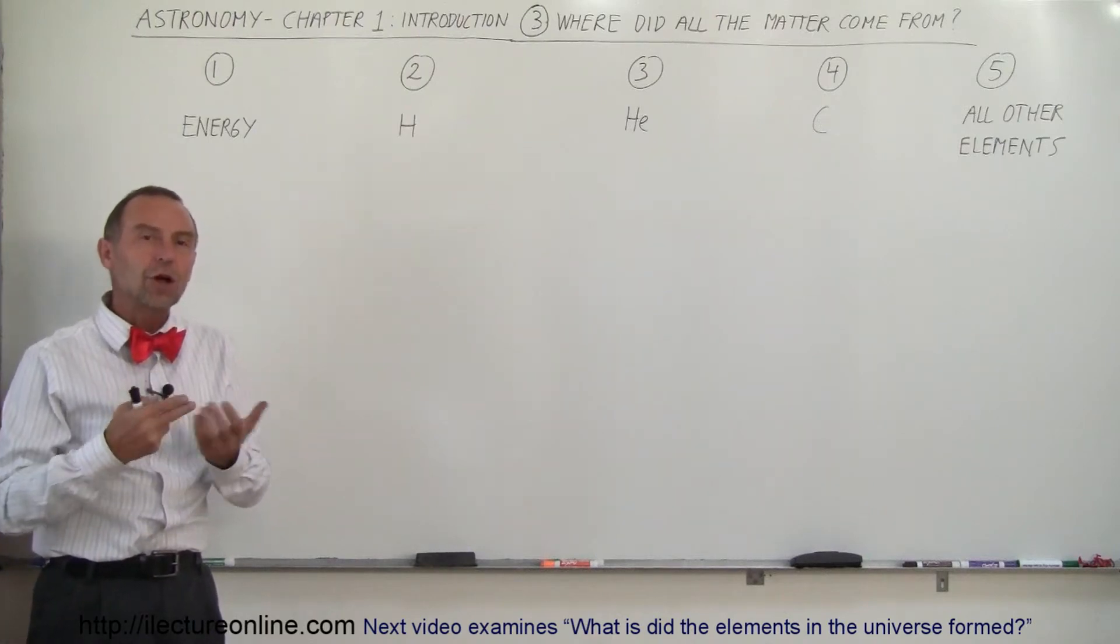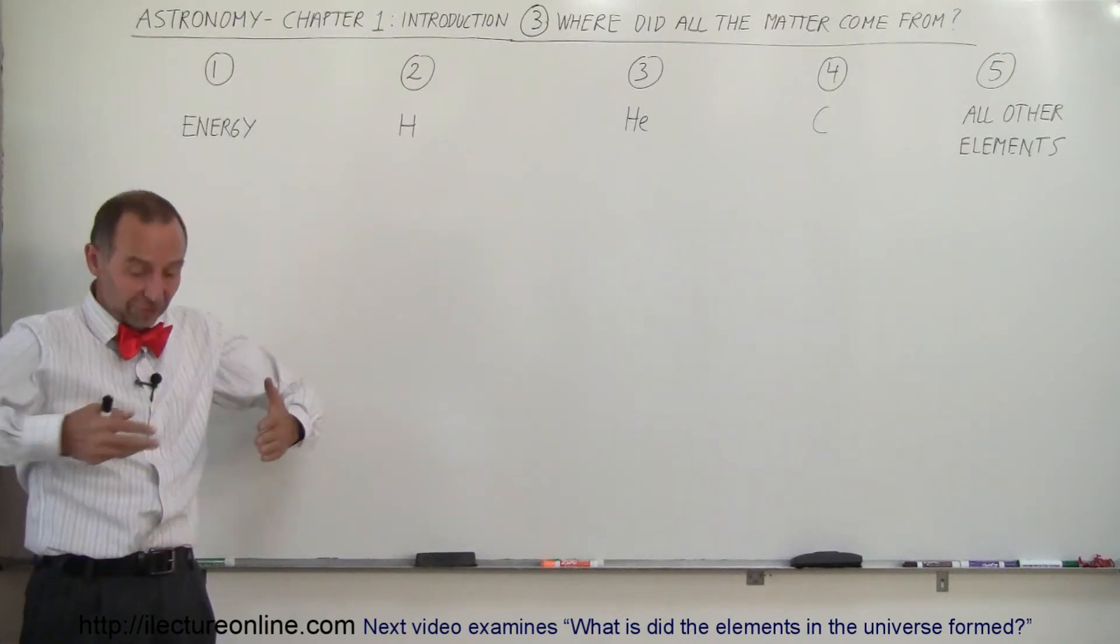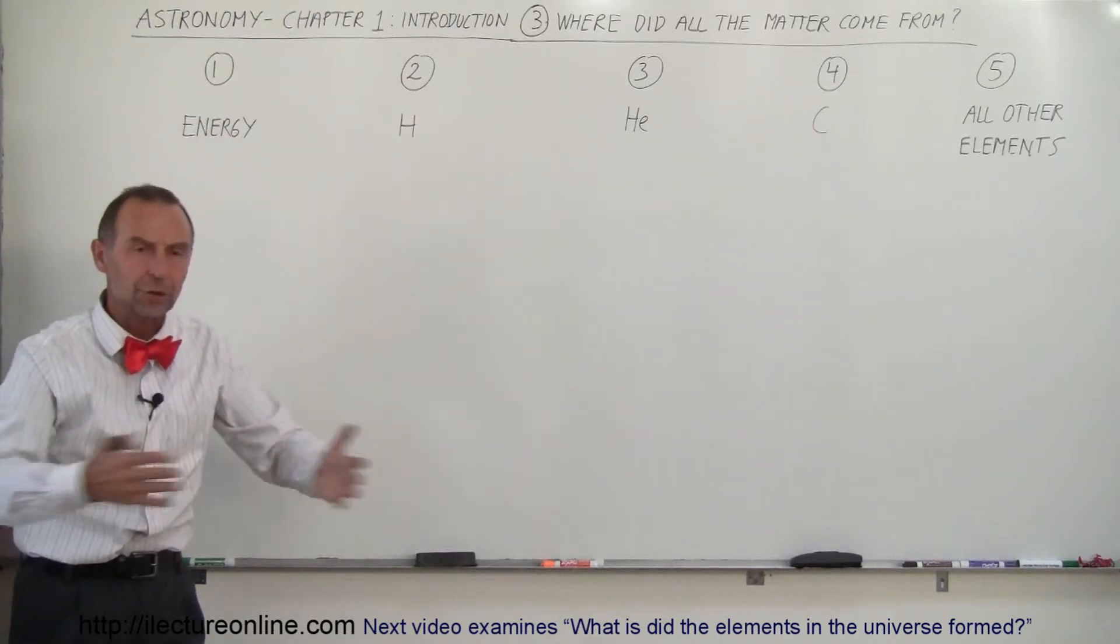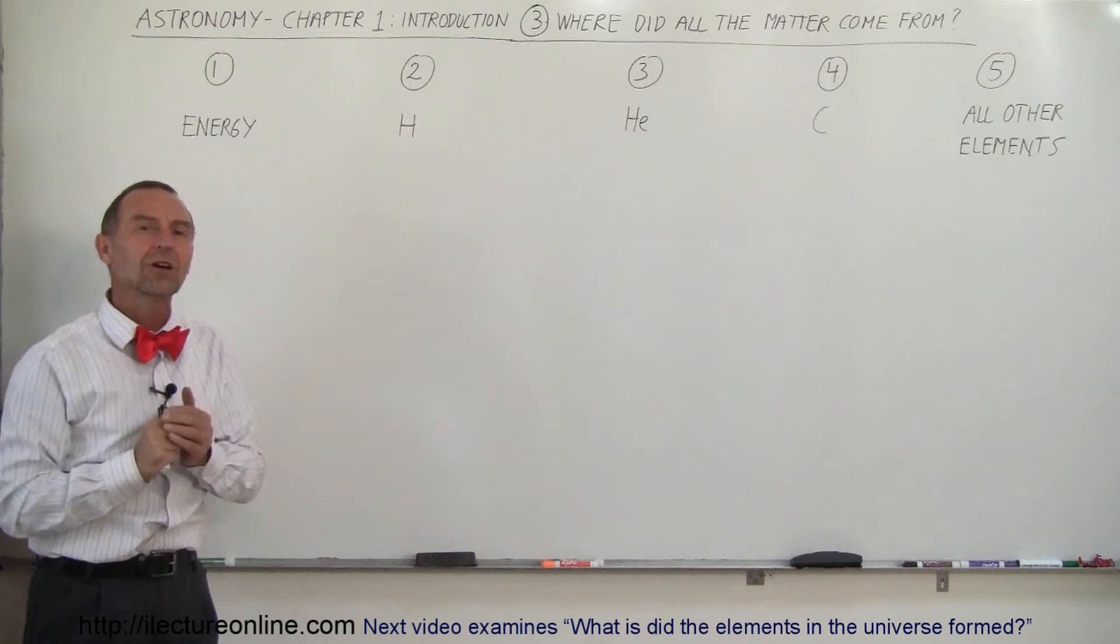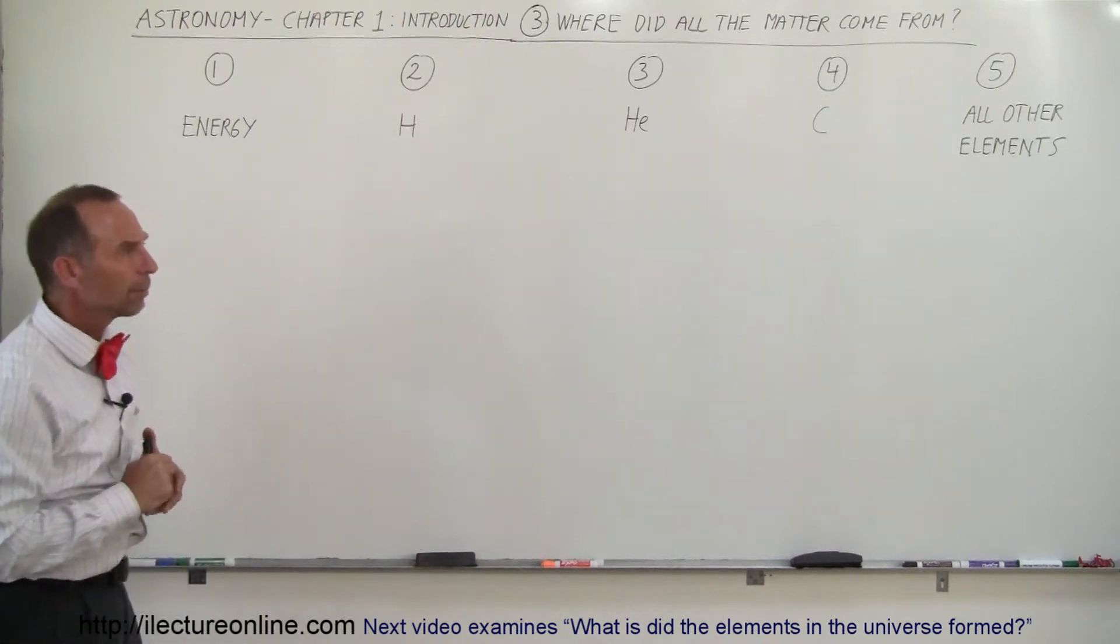And everything else in the universe, all the other elements on the periodic table, the stuff that we're made out of, everything around us is made of, the Earth is made of, that makes up a very small, tiny fraction of the matter in the universe. But where did it come from?